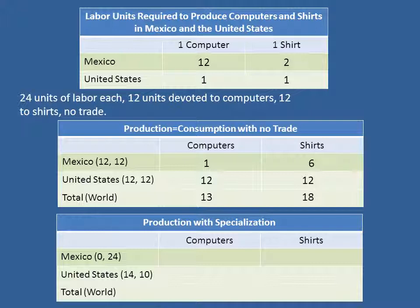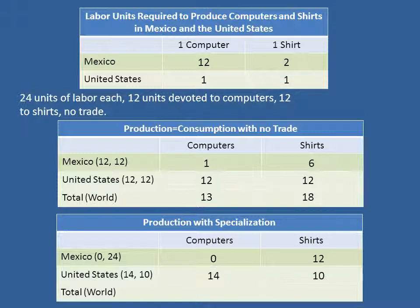Now let's suppose that Mexico specializes — puts all of its labor, 24 units of labor, into shirt production, zero into computer production. How many shirts and computers now? Well, clearly zero computers. Shirts: we now have 12 shirts — 24 units of labor, 2 units of labor per shirt, so you get 12 shirts in total. What about the United States, which now devotes 14 units of labor to computers and 10 to shirts? Again, because it's one unit of labor per computer and one unit of labor per shirt, we simply get 14 and 10.